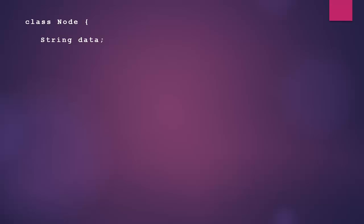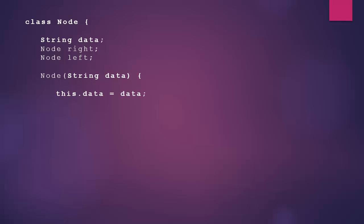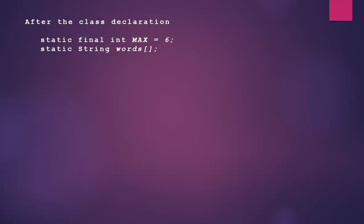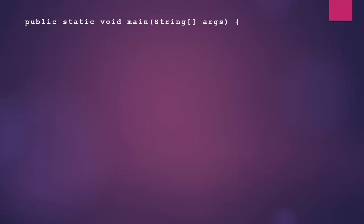Let's start with what our node looks like. We have a class Node with a String data field, a right node pointer, and a left node pointer. We assign data to itself in the constructor. After the class declaration, I want to declare a static final int MAX equal to six — we're not going to change this value. We also have a static String array named words.